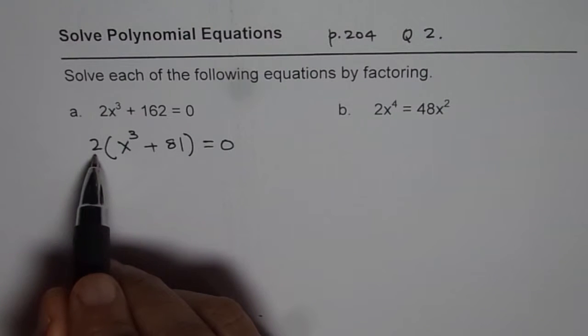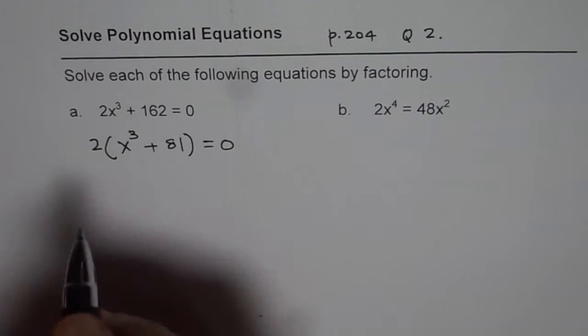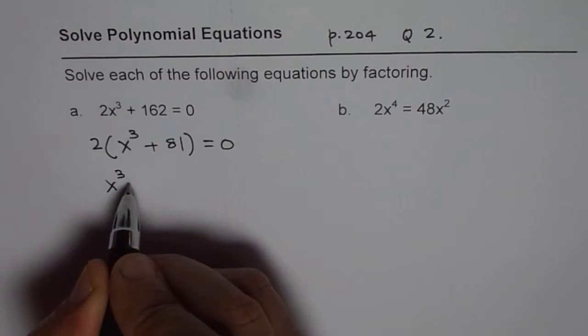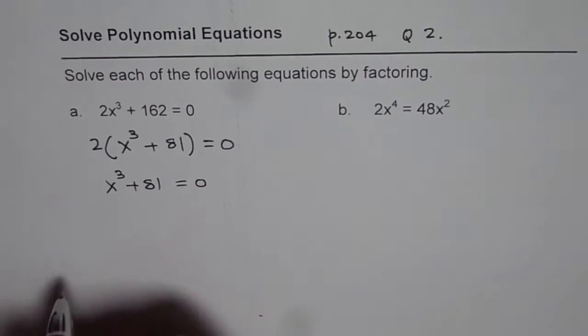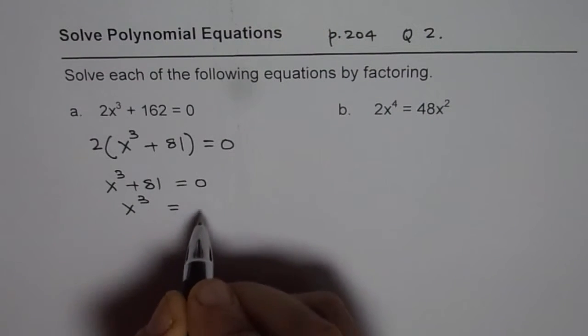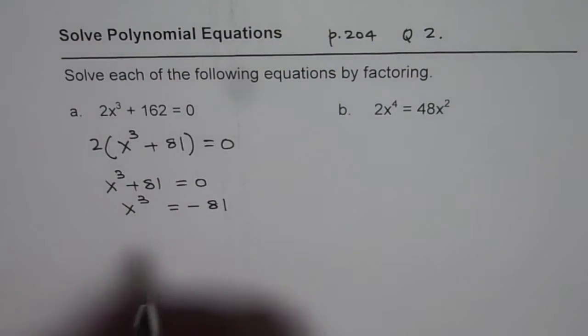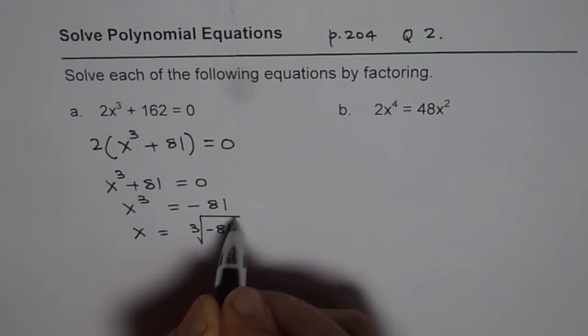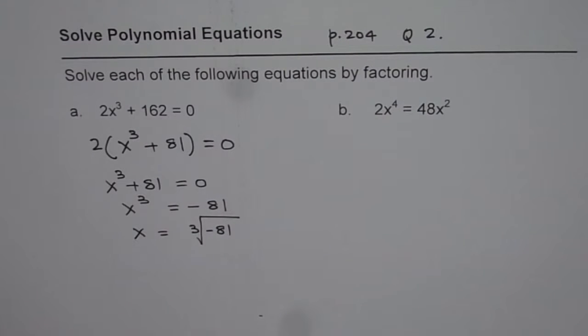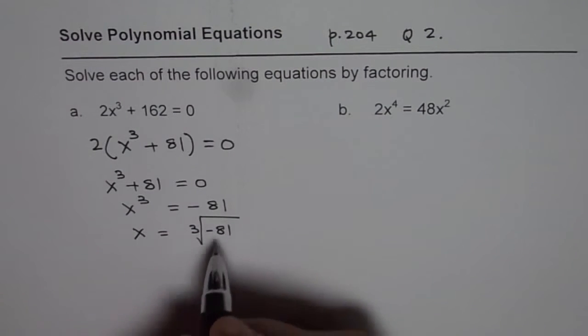Now, 2 cannot be 0, 2 is a constant. But x³ + 81 can be equal to 0. So let us solve for x. We get x³ = -81 or x = ∛(-81). Cube root of negative number is negative.